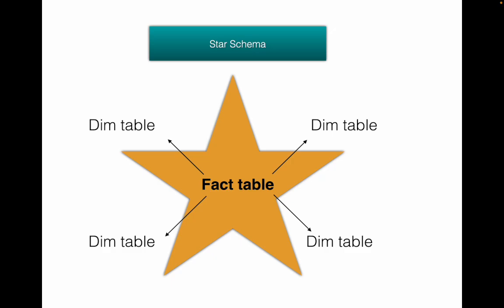The data in a star schema is very denormalized — the dimension tables are denormalized. That is the basic difference between a star schema and a snowflake schema. Now let's talk about snowflake schema and then we'll cover the differences and advantages.